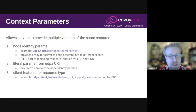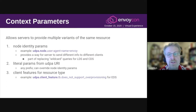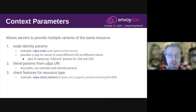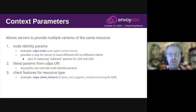The third source of context params is client features. These use the prefix udpa.client.feature. These are not user-controlled — they're added automatically by the implementation. Unlike the client features that exist in the node message today, these client features are resource-specific. So a client feature specific to EDS will only be added to requests for EDS resources. This prevents unnecessarily polluting caches with duplicate copies of the same resource, which would occur if the same CDS resource was accessed by two different clients that had different values for a client feature relevant only to EDS.